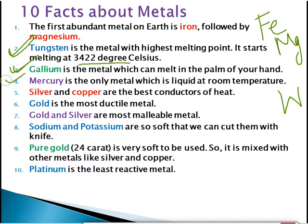Next, mercury is the only metal which is liquid at room temperature. We use mercury in thermometers. The symbol of mercury is Hg and the symbol of gallium is Ga.